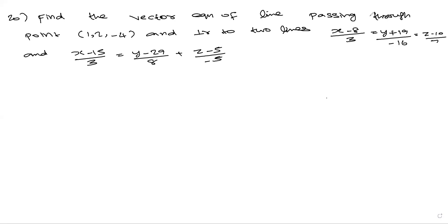Find the vector equation of a line passing through point (1, 2, -4) and perpendicular to two lines. The two lines are: (x-8)/3 = (y+9)/(-16) = (z-10)/7, and (x-15)/3 = (y-29)/8 = (z-5)/(-8).